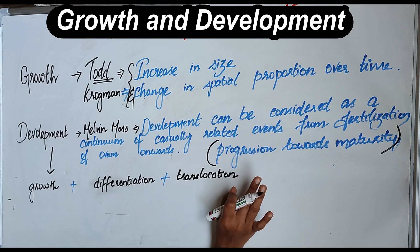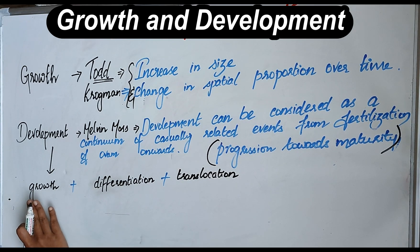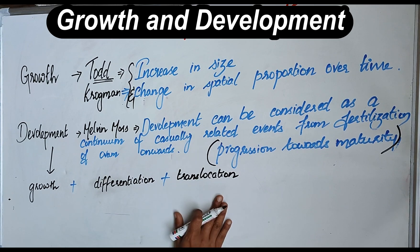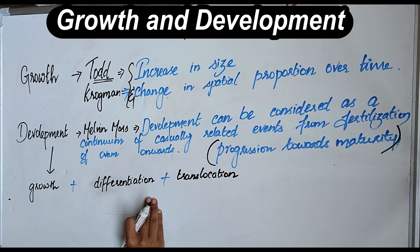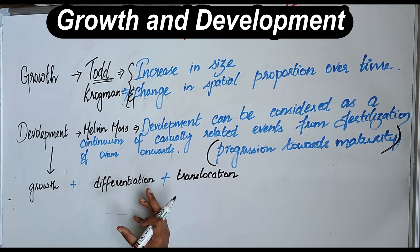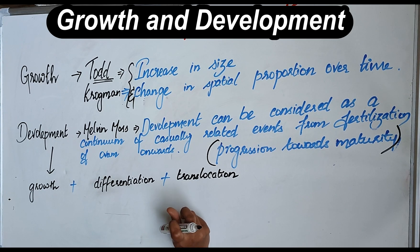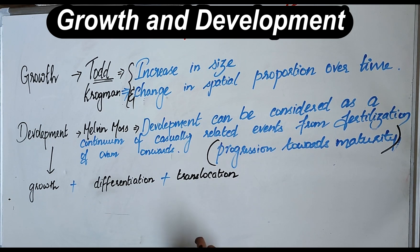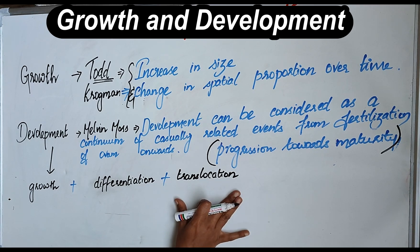Development consists of three things: growth plus differentiation plus translocation. Growth is change in size. Differentiation is a change in the form of a cell. Translocation is a genetic change in which a piece of a chromosome breaks and attaches to another chromosome — so it is a genetic change.